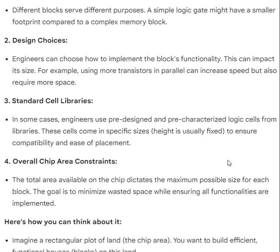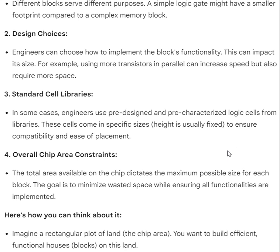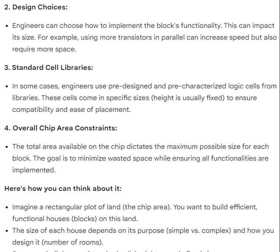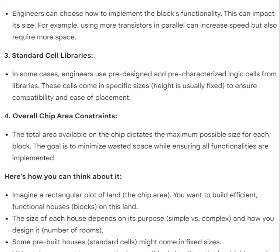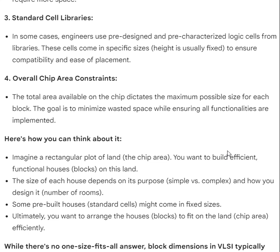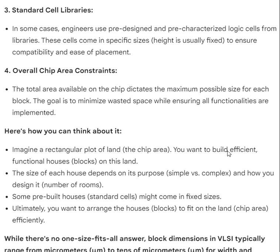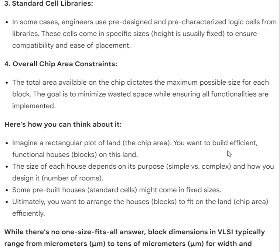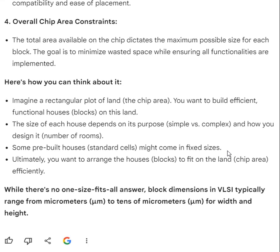Fourth, overall chip area constraints: the total area available on the chip dictates the maximum possible size for each block. The goal is to minimize wasted space while ensuring all functionalities are implemented. Here's how you can think about it: imagine a rectangular plot of land as the chip area — you want to build efficient, functional houses (blocks) on this land.